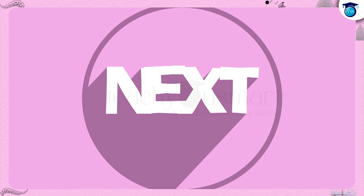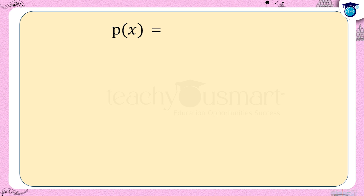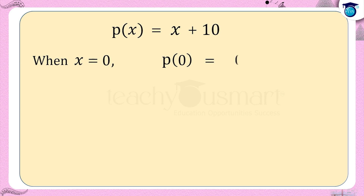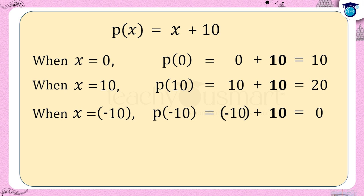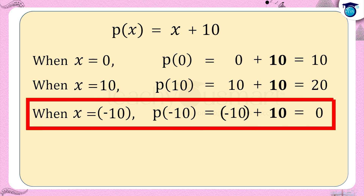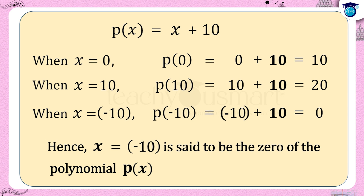Next, let us see what is the zero of a polynomial. Consider a polynomial p(x) = x + 10. When x equals 0, p(0) = 0 + 10 = 10. When x equals 10, p(10) = 10 + 10 = 20. When x equals minus 10, p(−10) = −10 + 10 = 0. That is the value of p(x) at x equals minus 10 is 0. Hence x equals minus 10 is said to be the zero of the polynomial p(x) = x + 10.